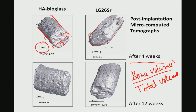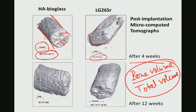You can also perform analysis to obtain bone volume (BV) divided by total volume (TV) — the BV/TV ratio — from the micro-CT values. If BV/TV is greater than 0.95, the implant is very effective at regenerating bone. If BV/TV is lower, the implant is not as effective at that time point for bone regeneration.